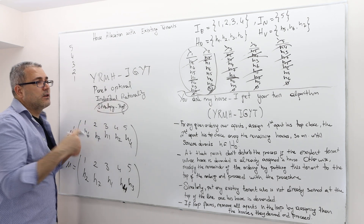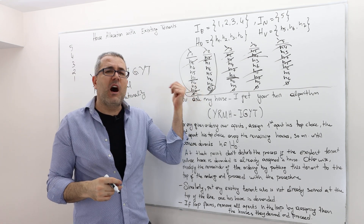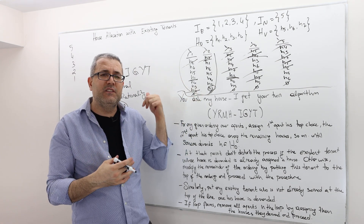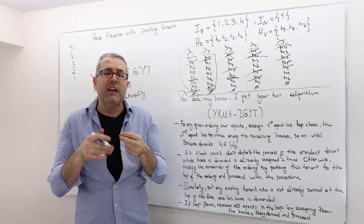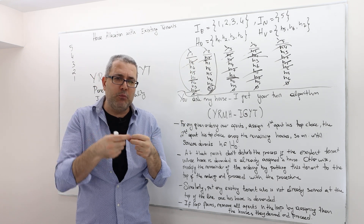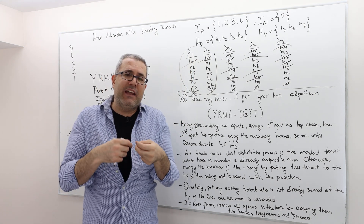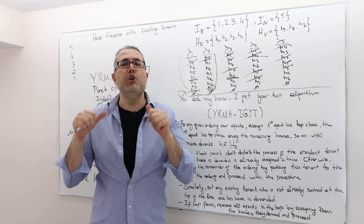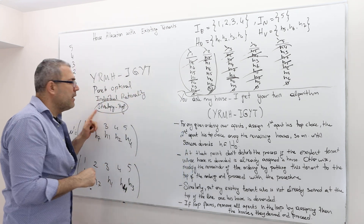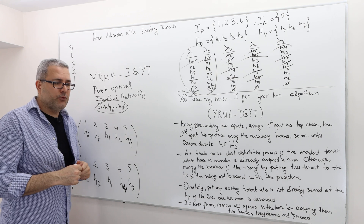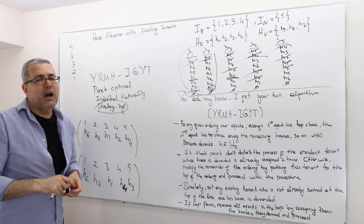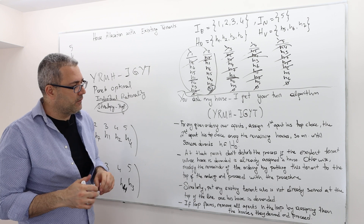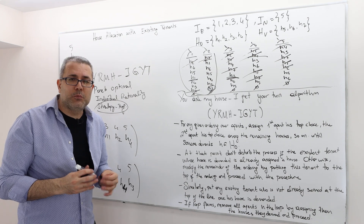The main question is whether agents will truthfully reveal their preferences or lie to get a better house. The answer is no — they cannot gain by misreporting, because the mechanism is strategy-proof. I hope that was a clear example.